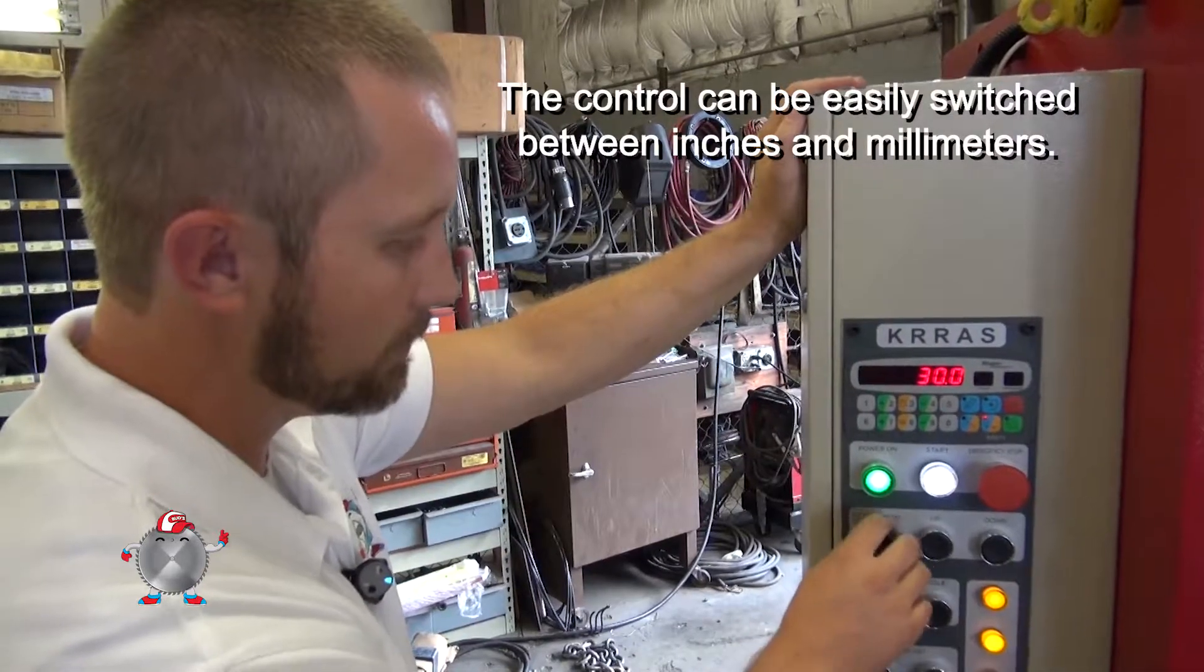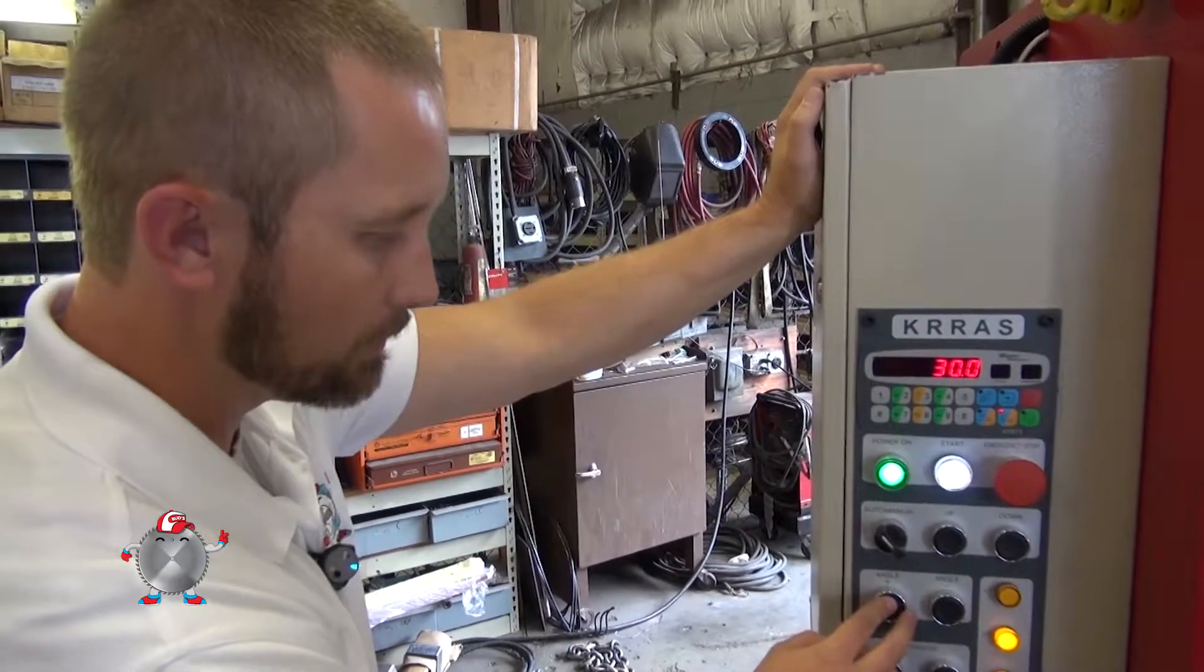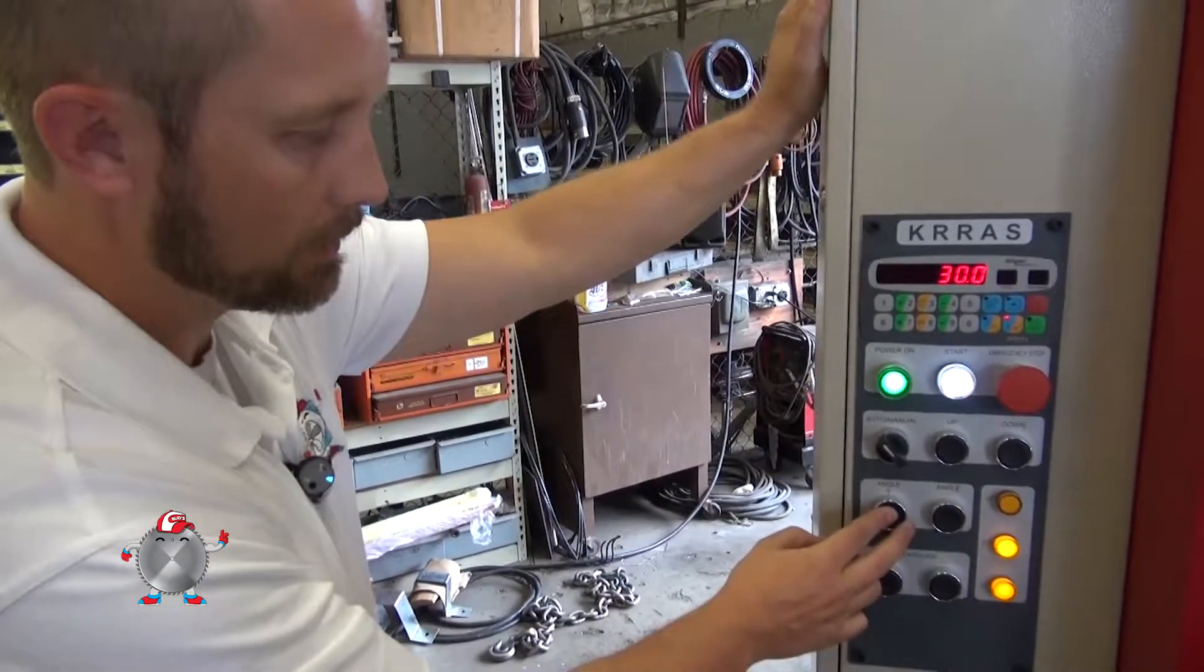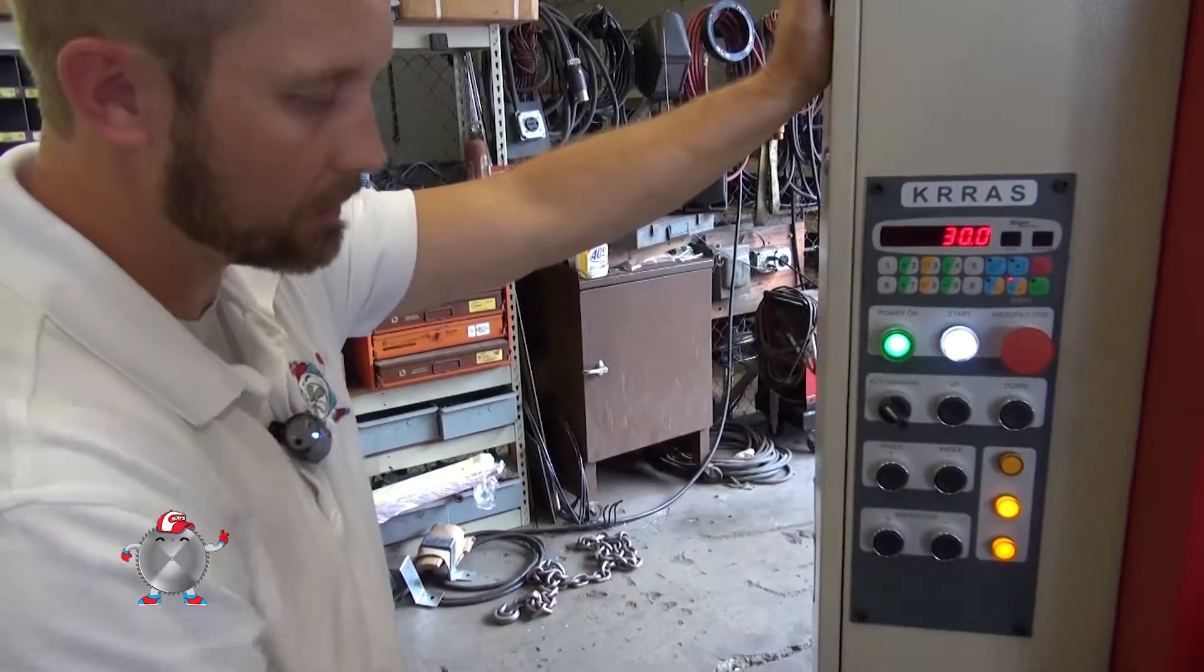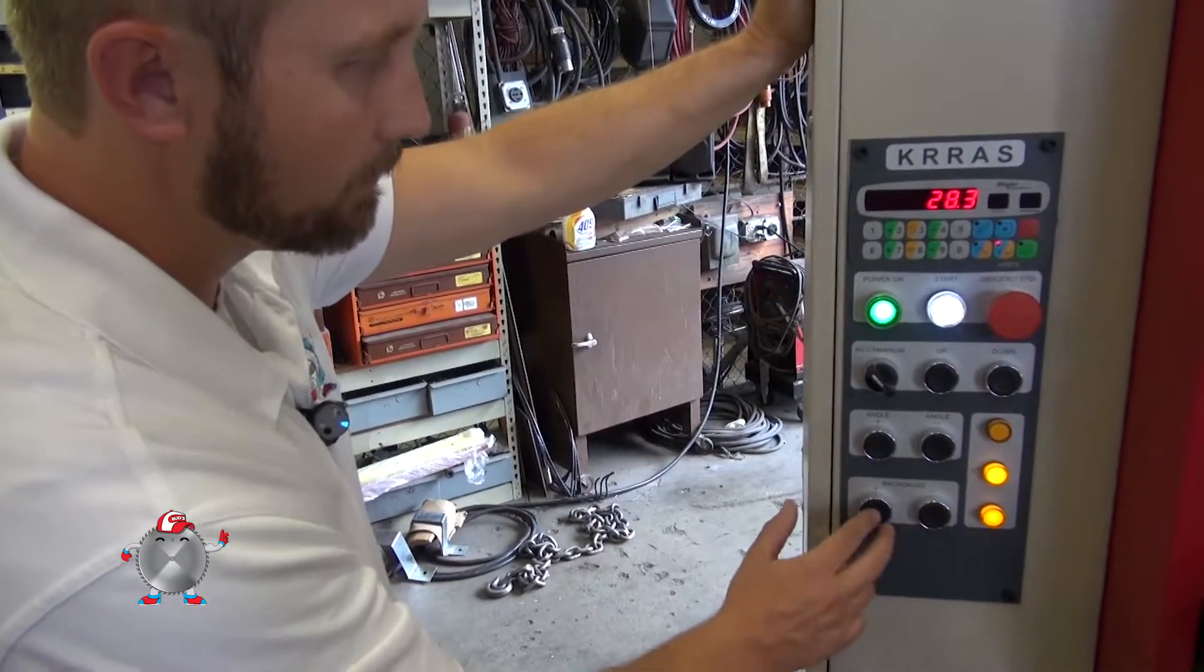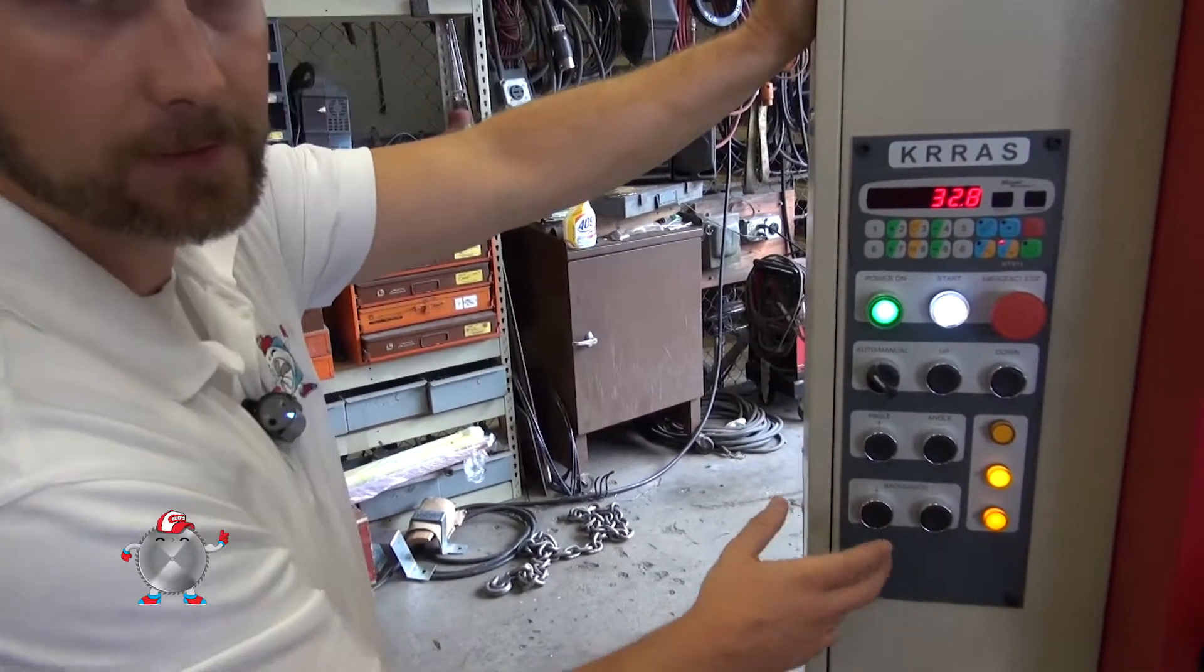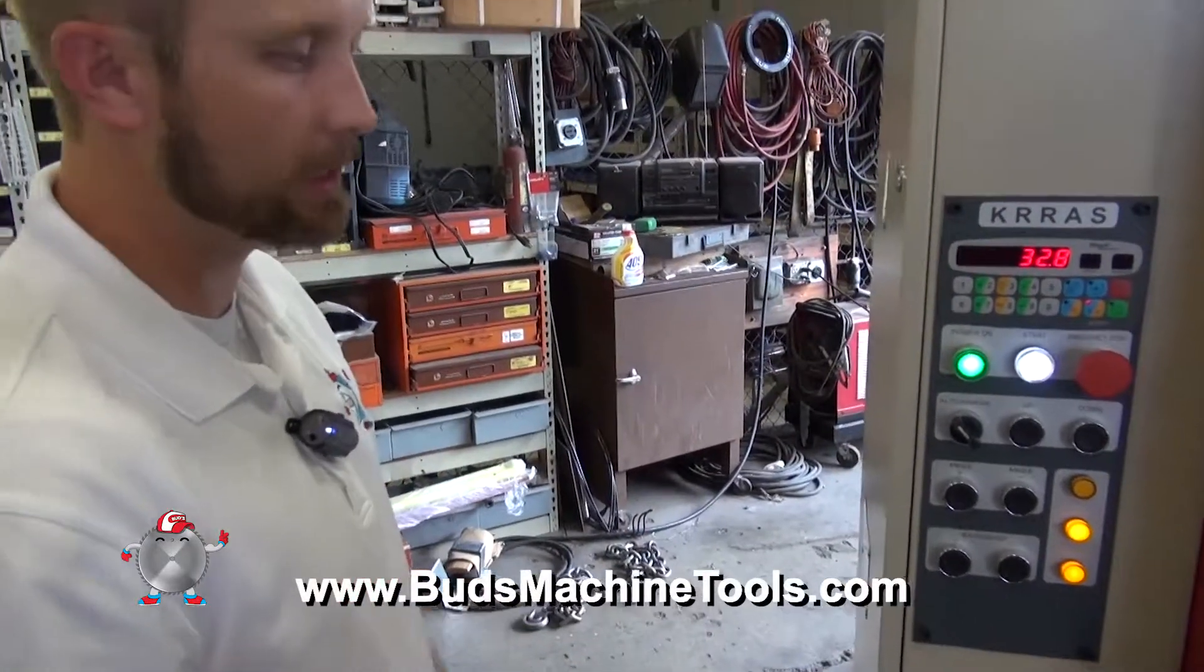We've got our manual and auto modes. We've also got our angle settings here, which you can indicate where you're at as far as your rake angle on your shear blade, where it's adjusted to. And this is always activated where you can move your back gauge any time by just pushing these two buttons. So it's pretty simple control, but very effective and user friendly.